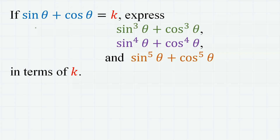Hello and welcome to my video. Today we are going to tackle some simple trigonometric expressions. The problem is: if sine theta plus cosine theta equals k, then express sine cube theta plus cosine cube theta, sine to the power of 4 theta plus cosine to the power of 4 theta, and sine to the power of 5 theta plus cosine to the power of 5 theta in terms of k.